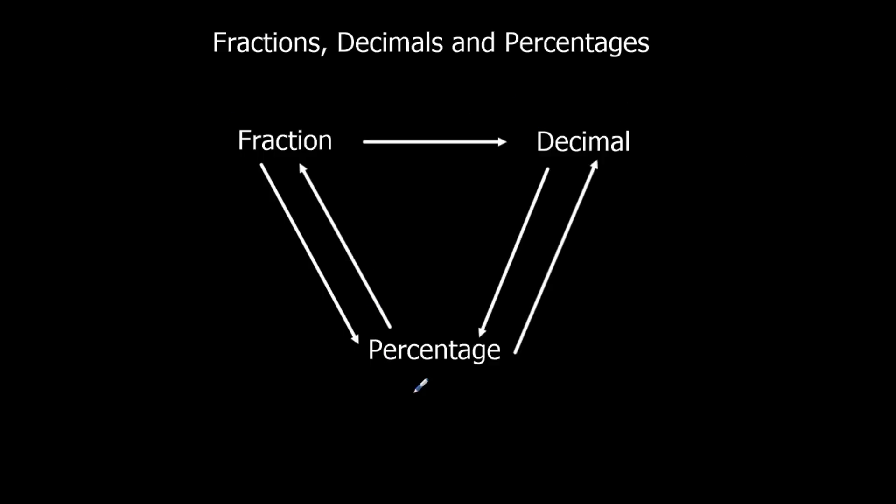If I give us a percentage example, let's have 68%. So decimal, divide by 100, so 0.68. And a fraction, write it over 100. So 68 over 100. Let's just half it, so 34 over 50. Half it again, 17 over 25. They're not in the same times table, so we can't simplify anymore. So 17 out of 25.